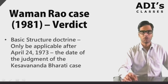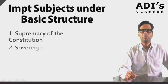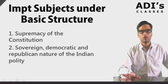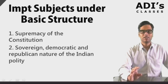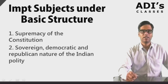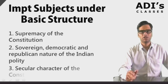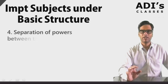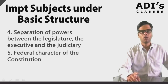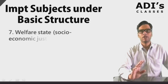The first element is supremacy of the constitution. In India, we have a balance between judicial supremacy and parliamentary supremacy, and the Supreme Court affirms supremacy of the constitution — not simply of any institution. The second is the sovereign, democratic, and republican nature of the Indian polity. The secular character of the country, separation of powers between the legislature, executive, and judiciary, the federal character of the polity, unity and integrity of the nation, and welfare state including socioeconomic justice for the masses — all fall under the ambit of the basic structure.